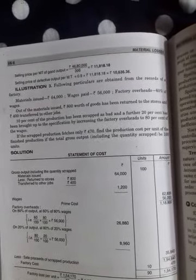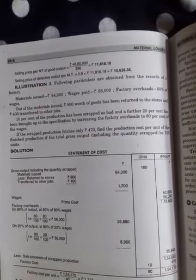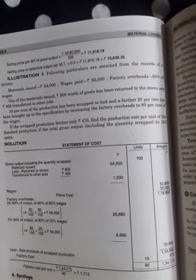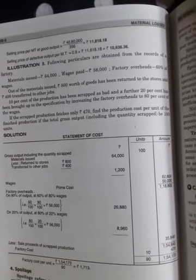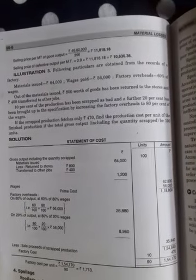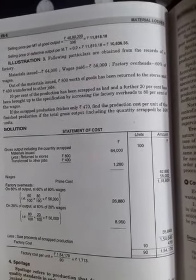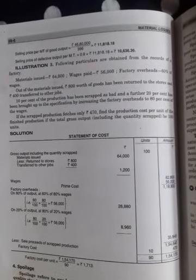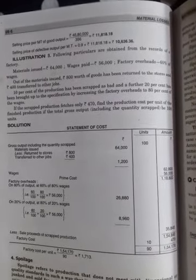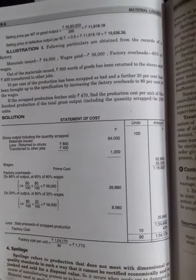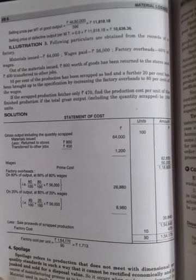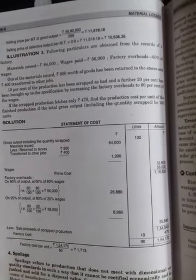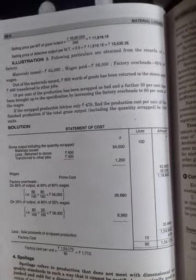The 20% wages gives 8,960. We add up, subtract factory expenses of 470 to get factory cost, then divide by 90 units for cost per unit. Gross output 100 units, scrap 10%, gives 90 units.